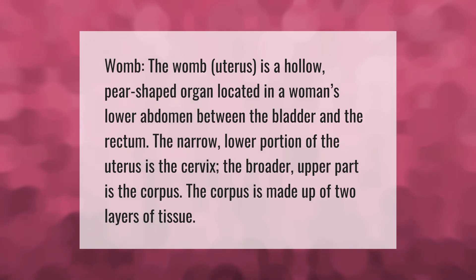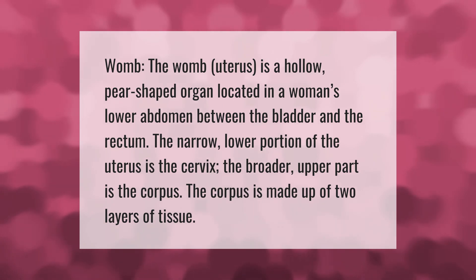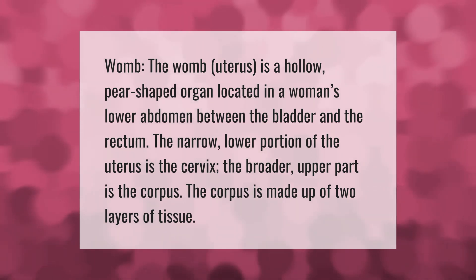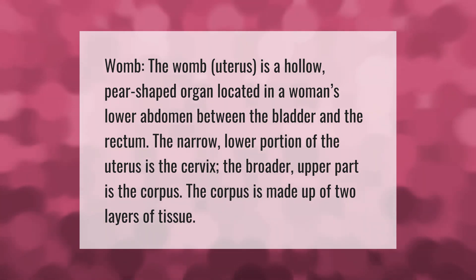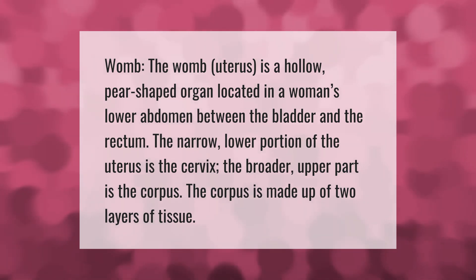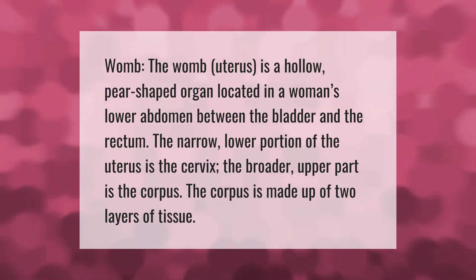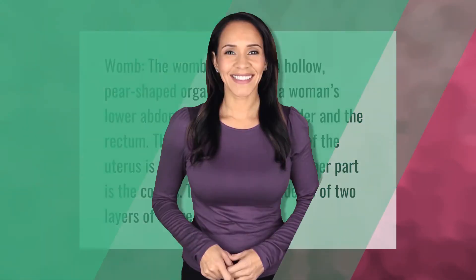The womb, or uterus, is a hollow pear-shaped organ located in a woman's lower abdomen, between the bladder and the rectum. The narrow lower portion of the uterus is the cervix; the broader upper part is the corpus. The corpus is made up of two layers of tissue. Thank you for watching — please subscribe and hit the bell notification.